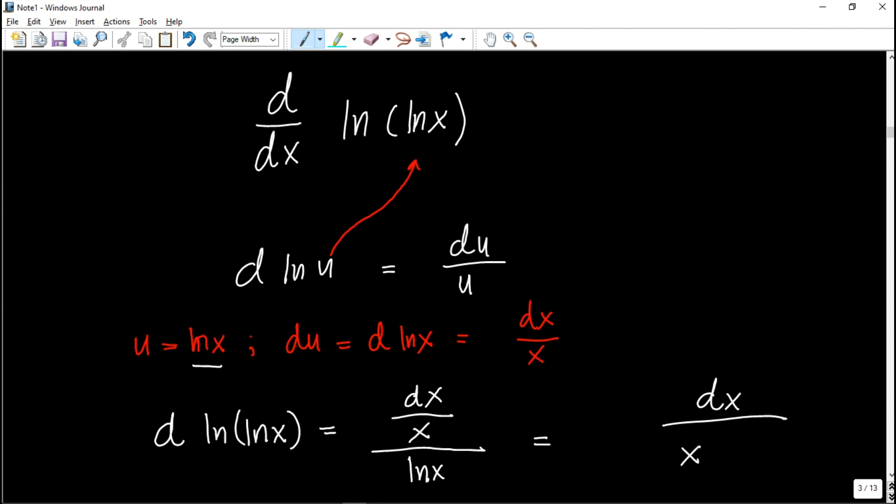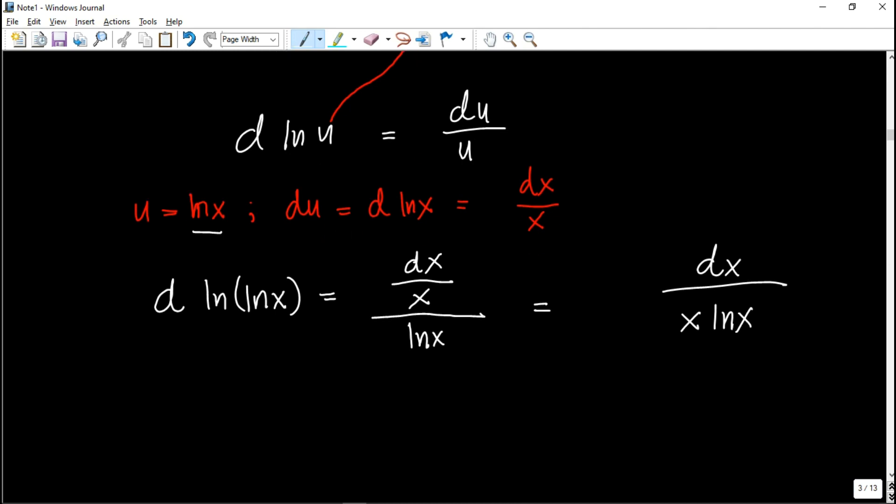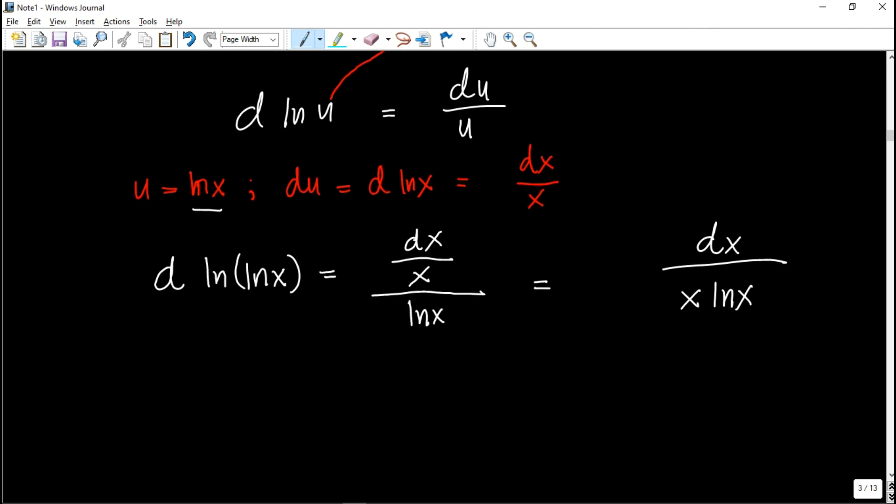Let's simplify it: x ln x. Then we move dx around. Dividing both sides by dx, this becomes the derivative of ln(ln x) with respect to x, which equals 1 over x ln x.